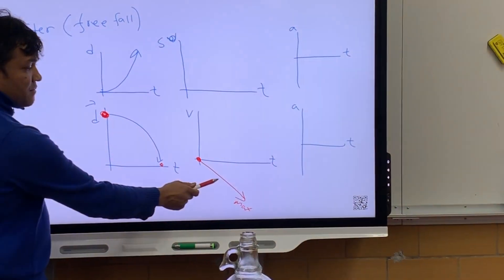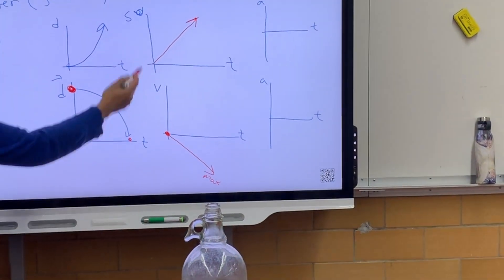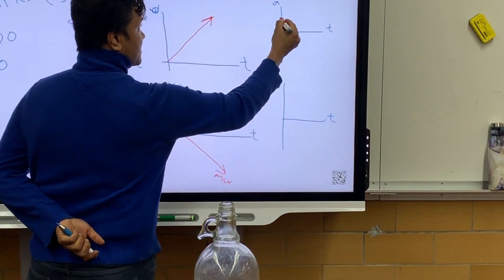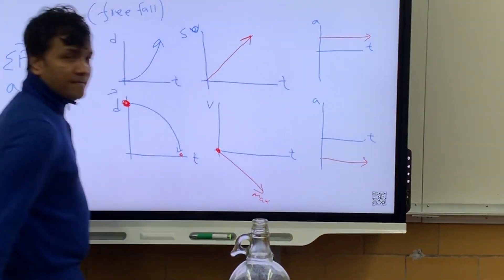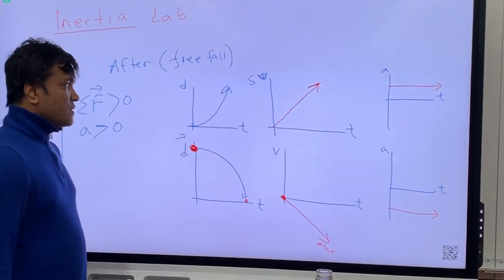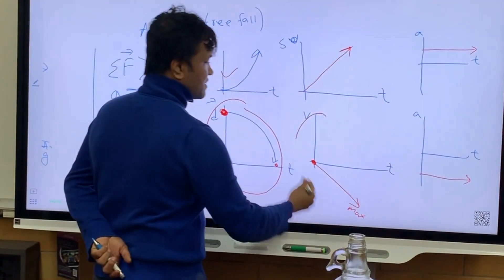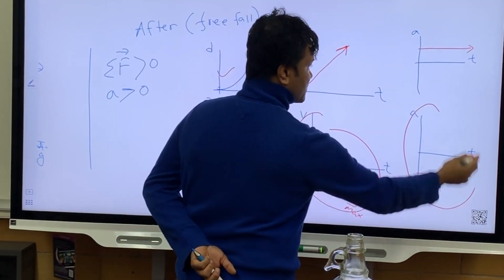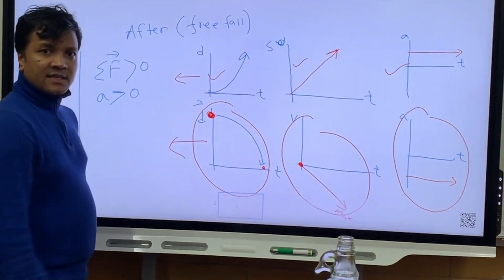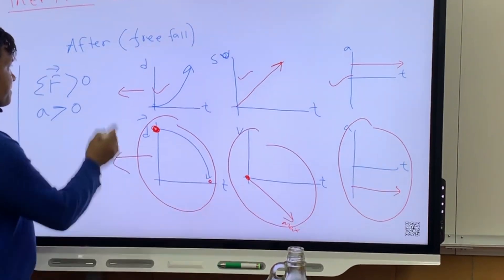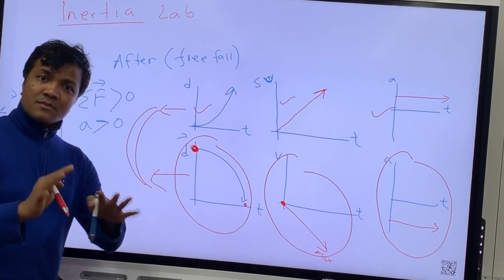We want to take the absolute value of this one, and then take the slope or derivative. Even if you don't understand calculus, it's very simple. The absolute value of each graph gives the next graph, and the derivative of each gives the next. This graph and that graph are the same story, just told from a different perspective.